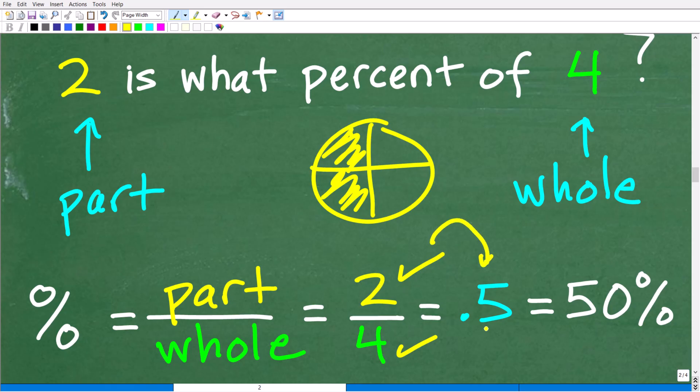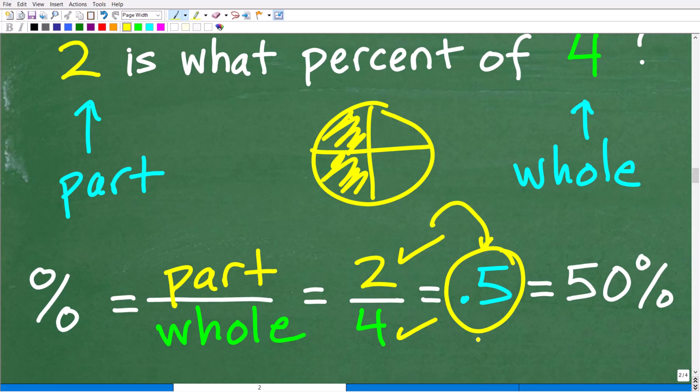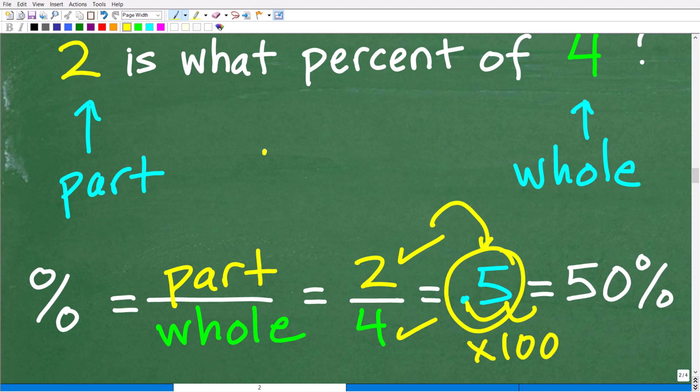But this is equivalent to the decimal 0.5. Now how do we write percents? Well if you have a decimal or a fraction, but I'm going to work with decimals because it's more common, what we need to do is multiply by 100, which is the same thing as moving the decimal point over two places to the right. So if I have 0.5 and I move the decimal point over two places to the right, so that would be one and two, it's going to be 50%. So two is what percent of four? 50%.